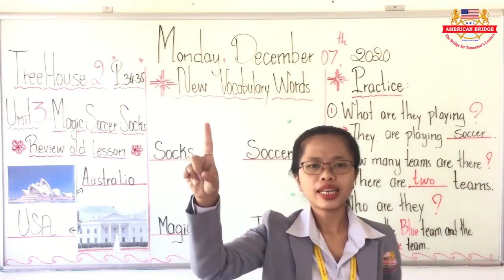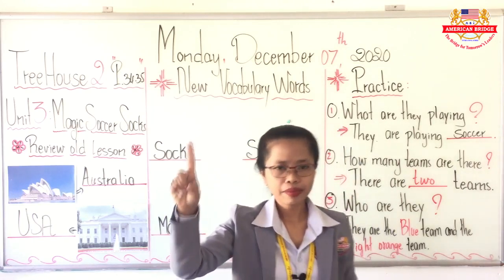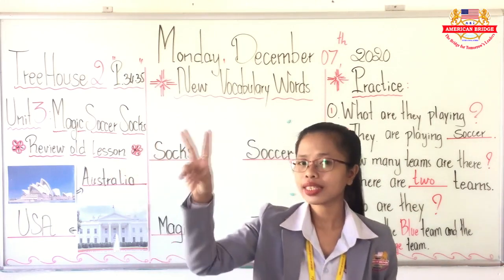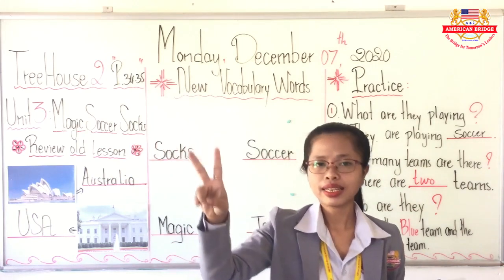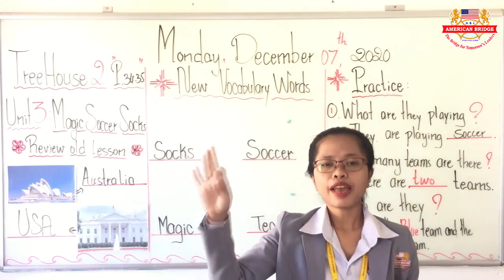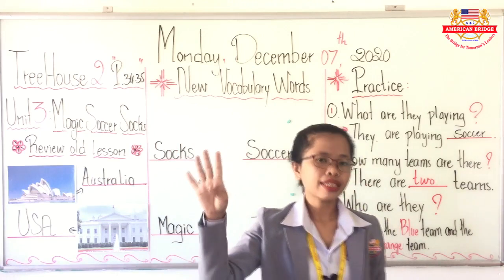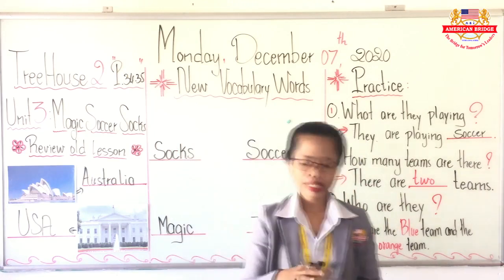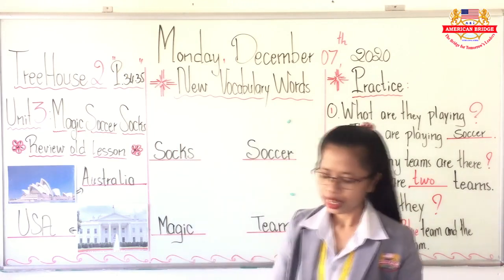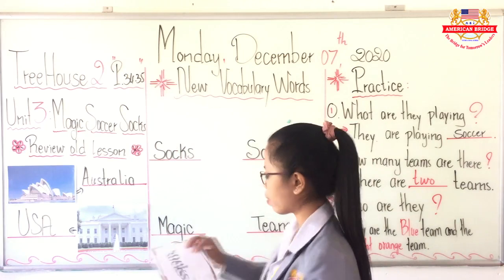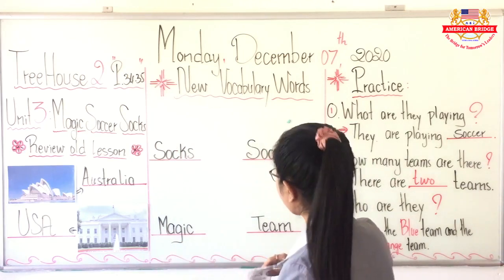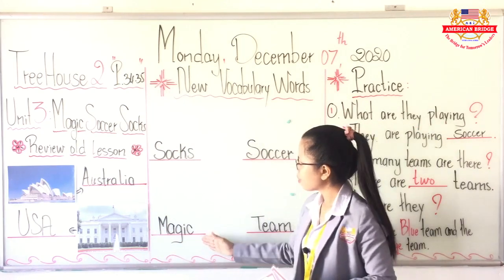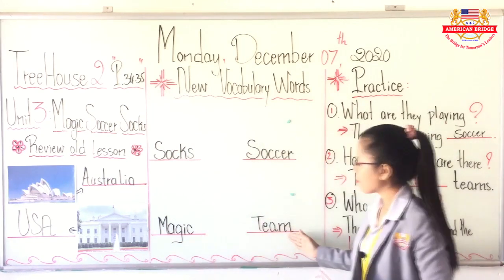The first picture is socks. Second picture is magic. Third picture is team. And fourth picture is soccer. So it's time for the teacher to stick the picture with the correct word — between the first, second, third, and fourth word, which one is related to this picture?